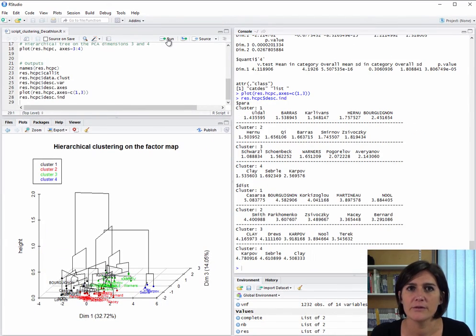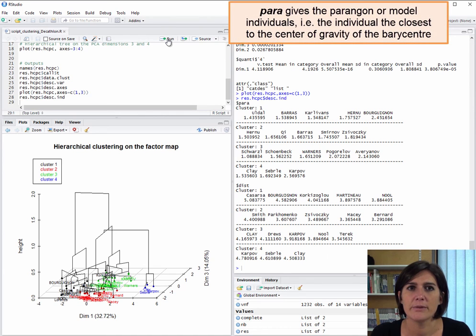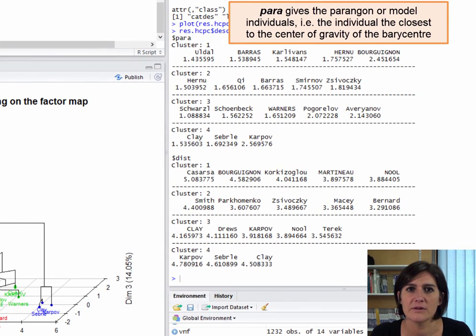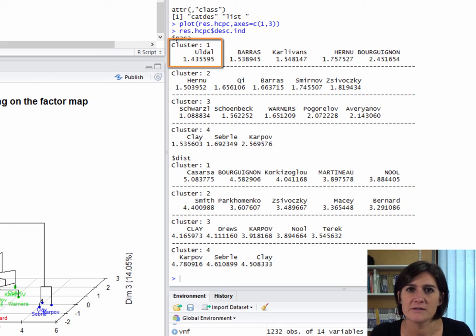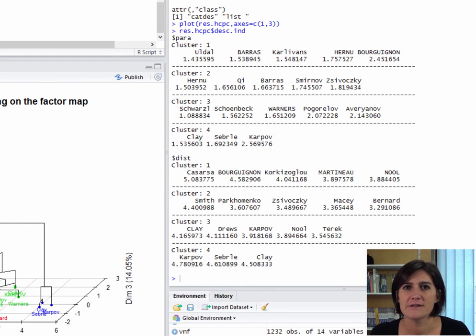Now we can have a look at the results for the individuals. For this, we have two objects. One object called Para concerns the model individuals, that is the ones closest to the center of each class. For class 1, this model individual is Uldal, who is at a distance of 1.43 from the barycenter of the class 1 individuals. This is the closest individual to the barycenter. The second closest is Baras, then Carlevans, etc. For the class 2 individuals, the closest is Ernu, and so on.